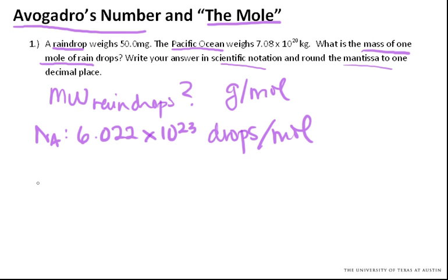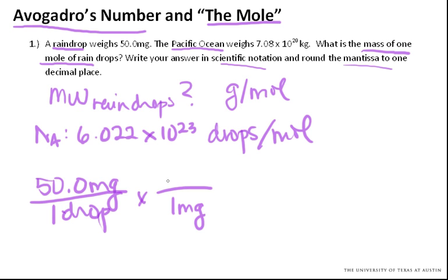We are given that one raindrop weighs 50.0 milligrams. So we need to go from milligrams in drops to grams per mole. So let's start by converting milligrams to grams because that's easy. So one milligram corresponds to 10 to the minus 3 grams. Milligrams cancel. Now we have grams on top. That's good. That's what we want.